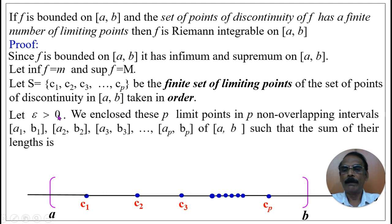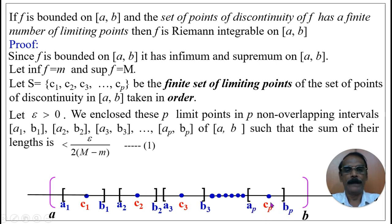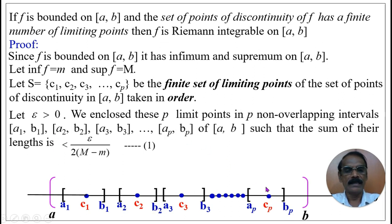Let epsilon > 0. We enclose these p limiting points in p non-overlapping intervals [a₁, b₁], [a₂, b₂], [a₃, b₃], …, [aₚ, bₚ]. That is, the first limiting point c₁ is enclosed by [a₁, b₁], the second limiting point c₂ is enclosed by [a₂, b₂], and so on.